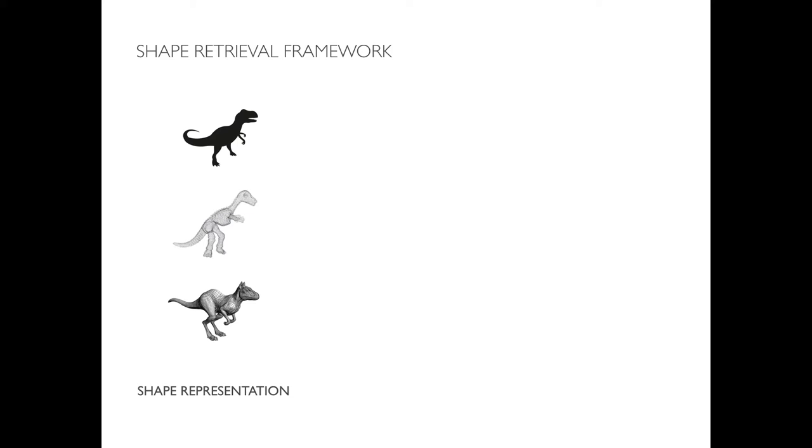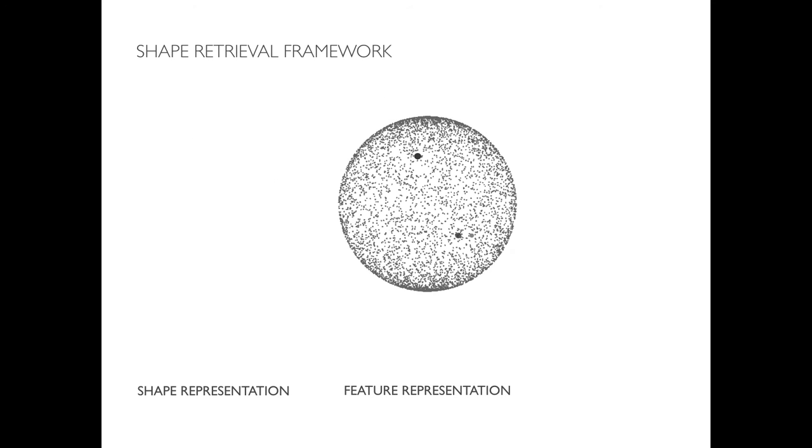Here's our shape retrieval framework. We're given a shape representation, usually a point cloud or mesh. We extract a feature representation from this. Our feature representation is actually constrained to the unit hypersphere. Finally, our primary question is this: Given a completely new query shape, what are the closest shapes to it from our database?